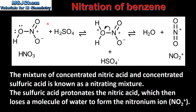The nitrating mixture consists of concentrated nitric acid and concentrated sulfuric acid. Because sulfuric acid is a stronger acid than nitric acid, it protonates the nitric acid by donating a proton. This forms H2NO3+ and HSO4−. The H2NO3+ then loses a molecule of water to form NO2+, which is the nitronium ion.